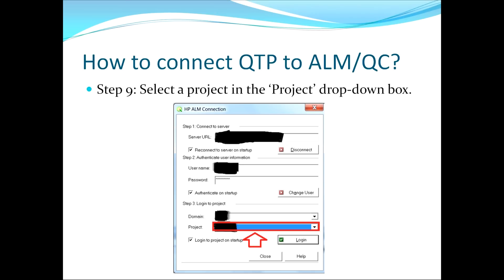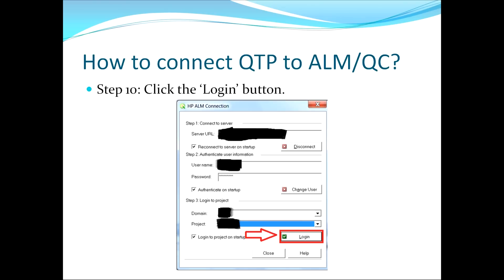Go ahead and make your selection in the project drop-down. Once you've done that, you'll notice there is a checkbox immediately beneath the project input that reads Login to Project on Startup. If you check this box, you're telling QTP that not only do you want to make a connection to the Quality Center server when it loads and connect with your username and password, you would also like it to automatically connect to the project you just selected. This is typically what you would like to have happen. However, if not, click to uncheck this checkbox before you click the Login button. Once you've made your decision, go ahead and click the Login button.